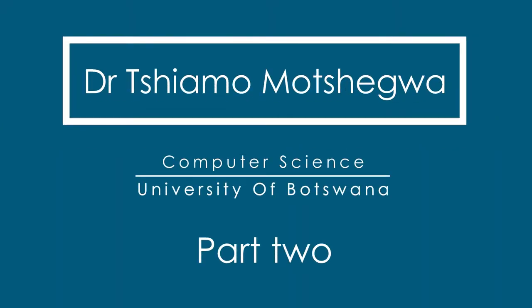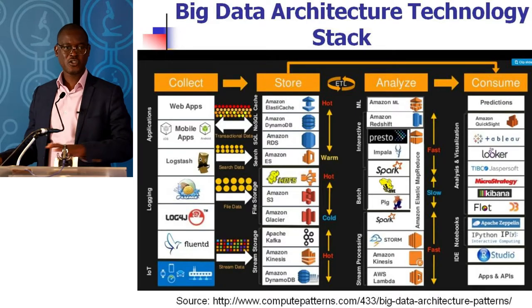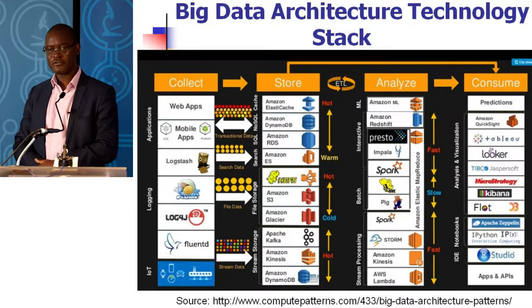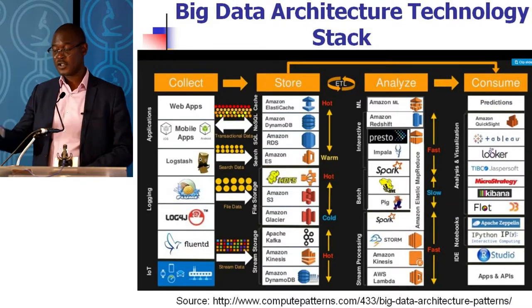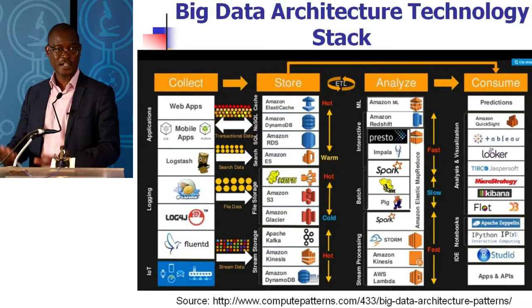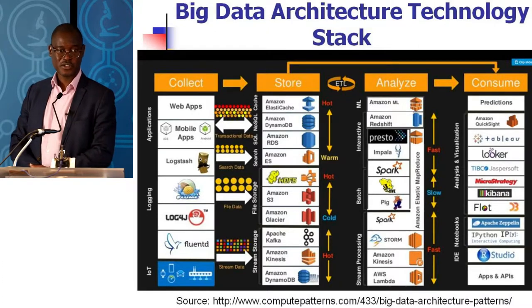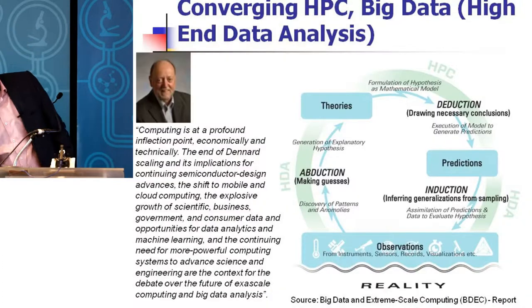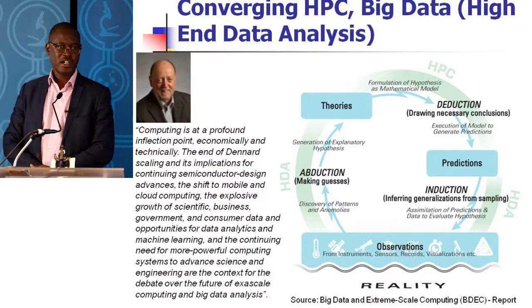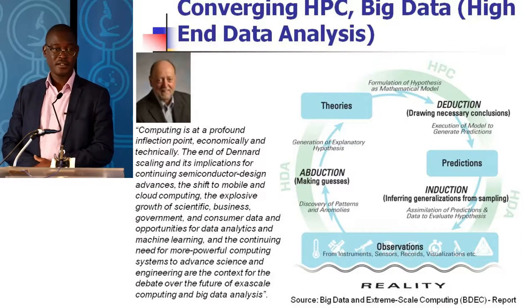In terms of enabling architectures, colleagues at CSR are probably more versed with some of these things. What technologies do we need to enable all that? At a very high level, we collect the data, we store it, we analyze it, and we consume it. There's a frenzy of developments in software stacks to help us do these things. I submit this is something you should really be thinking about teaching early on in computer science courses. People are now talking about the convergence of big data, high-end data analysis, and HPC.